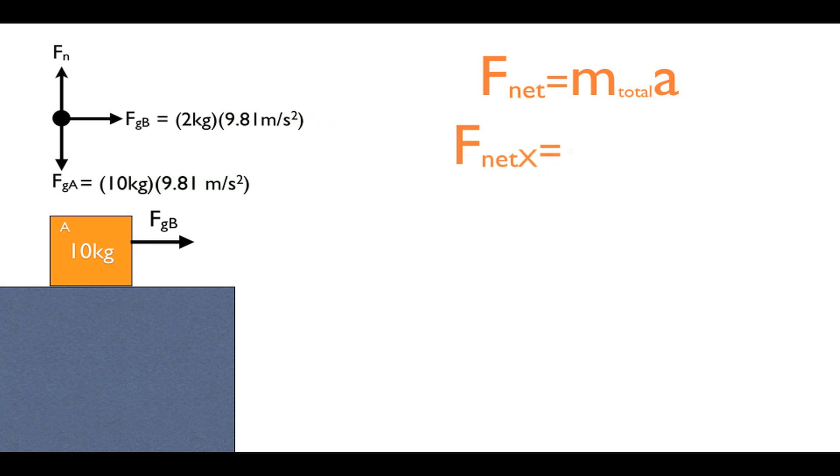Now since both boxes A and B have mass, they have inertia that will affect the acceleration of the system. Newton's second law requires us to take the total mass of the system into the equation.